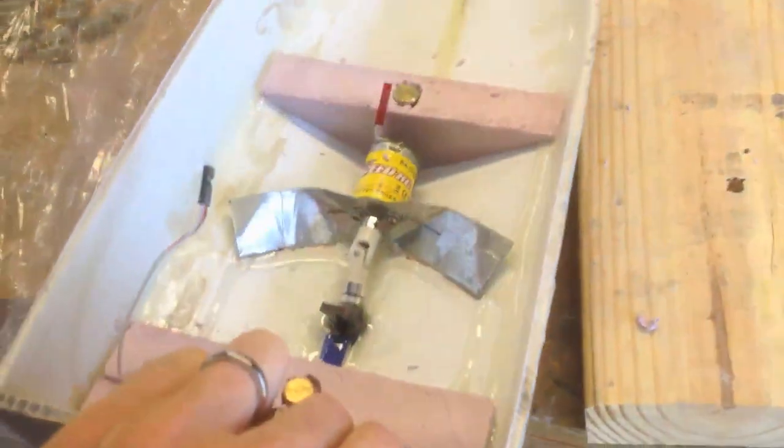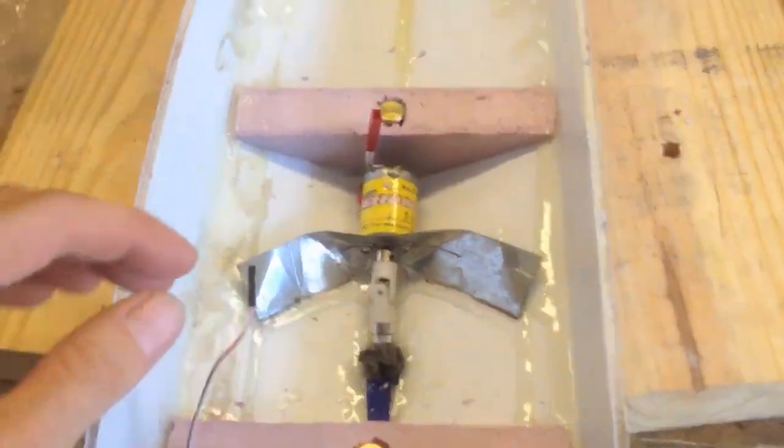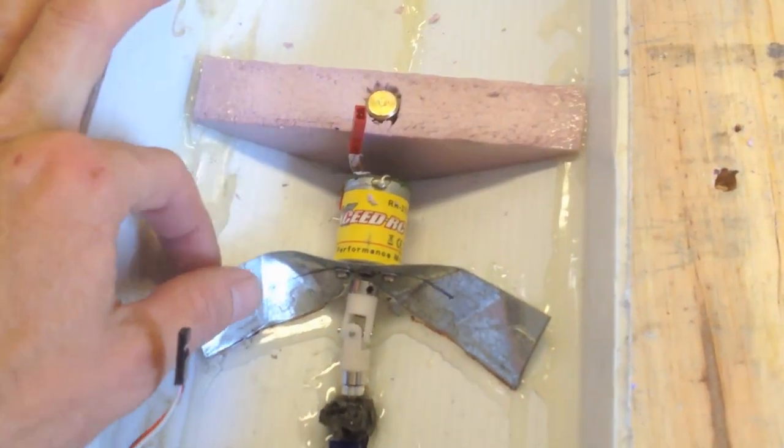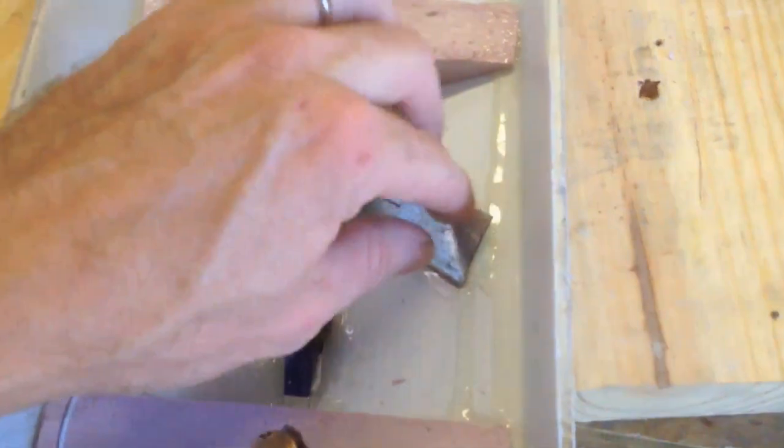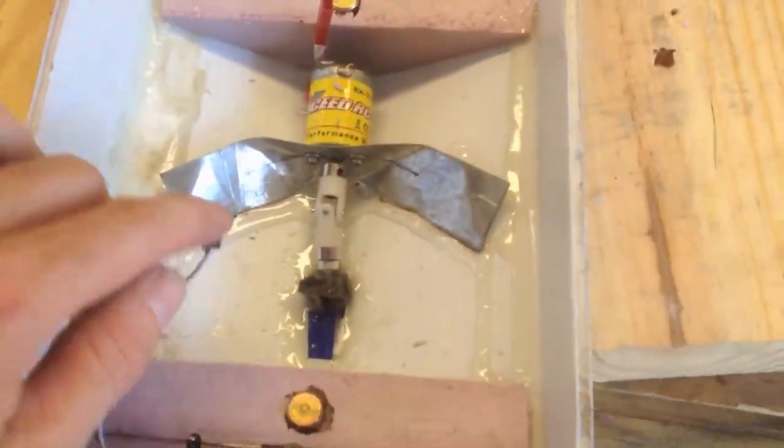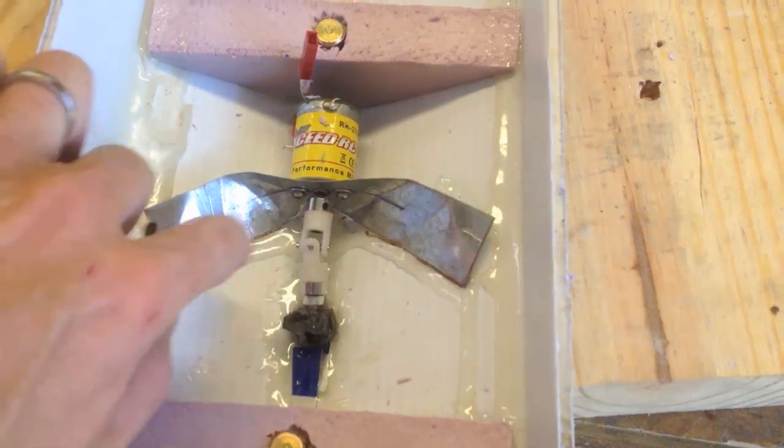Now, this is the motor from the helicopter. I basically mounted that with this galvanized sheet metal. I think it's 22 gauge. And epoxied that as well.